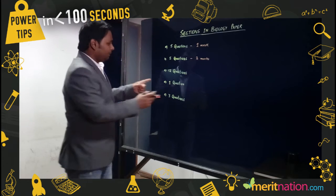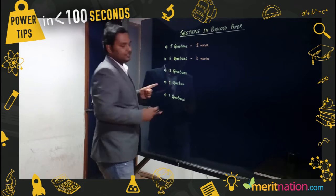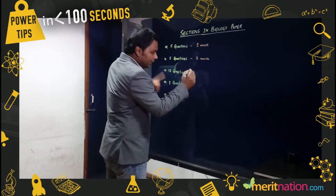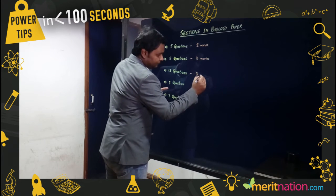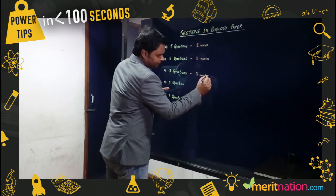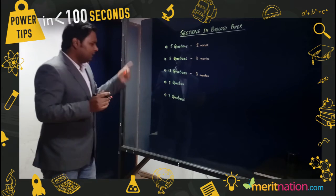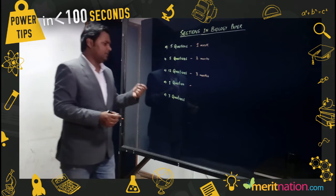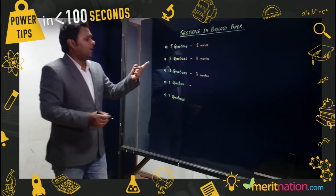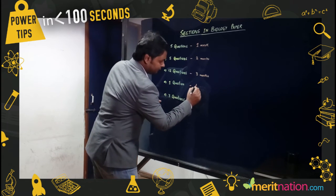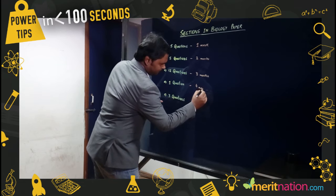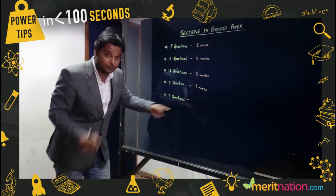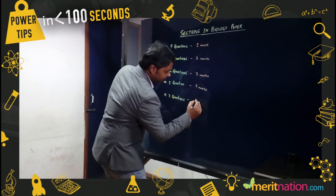The biggest section is Section C, which has 12 questions carrying three marks each. From the previous paper, we also know there is one question of four marks. The last section has only three questions, each worth five marks.